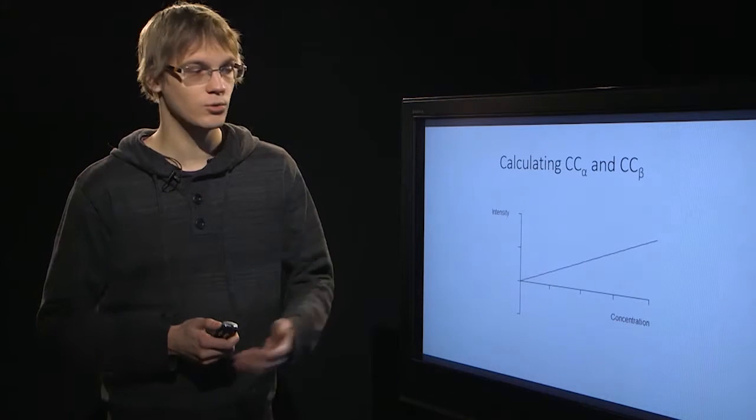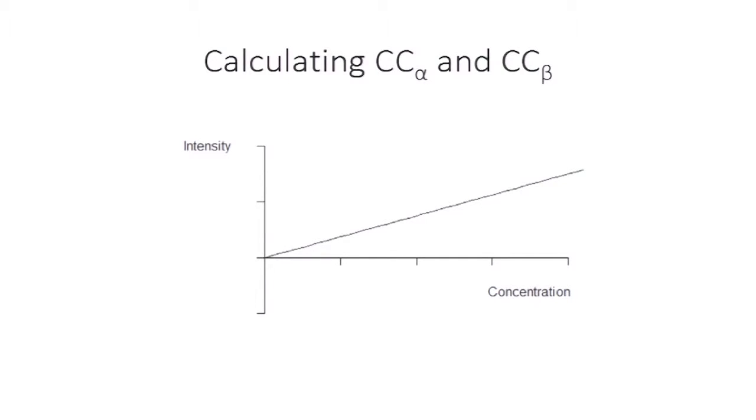Here we have a calibration function in the intensity and concentration scale, and let's say that we already know the distribution of intensity values at the blank sample. Now we can calculate this decision limit using the standard deviation and the mean of the blank samples. And using the calibration function, we can find the decision limit in the concentration scale.